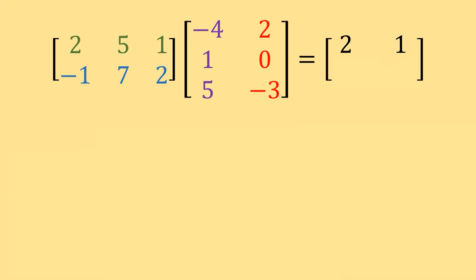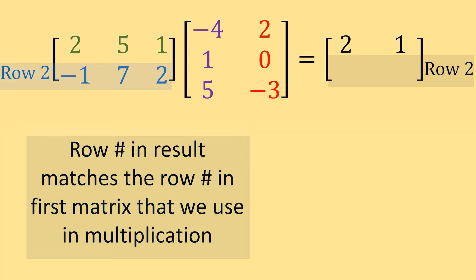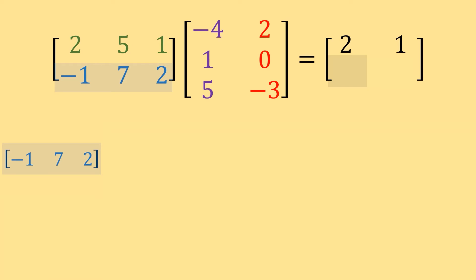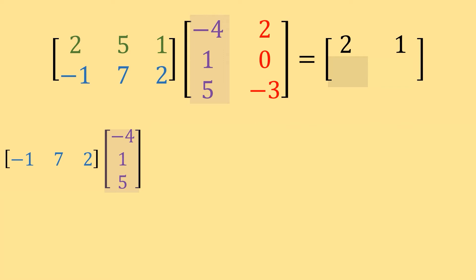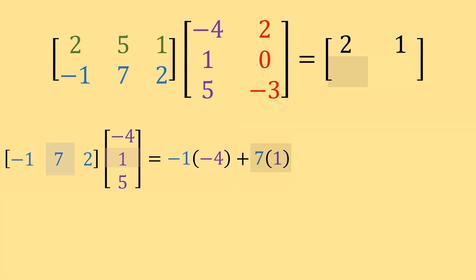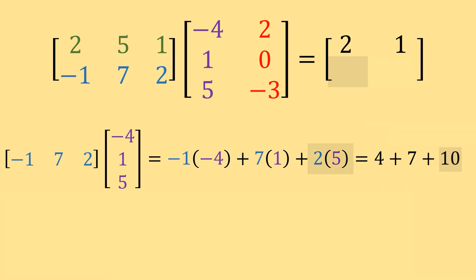Now for the second row, we find the value in row 2, column 1. We use row 2 from matrix A, because the row number in the result tells us which row to use in matrix A. Similarly, the column in our result tells us which column to use in matrix B. So we multiply row negative 1, 7, 2 by column negative 4, 1, 5. This gives negative 1 times negative 4 plus 7 times 1 plus 2 times 5, which equals 4 plus 7 plus 10, which equals 21.